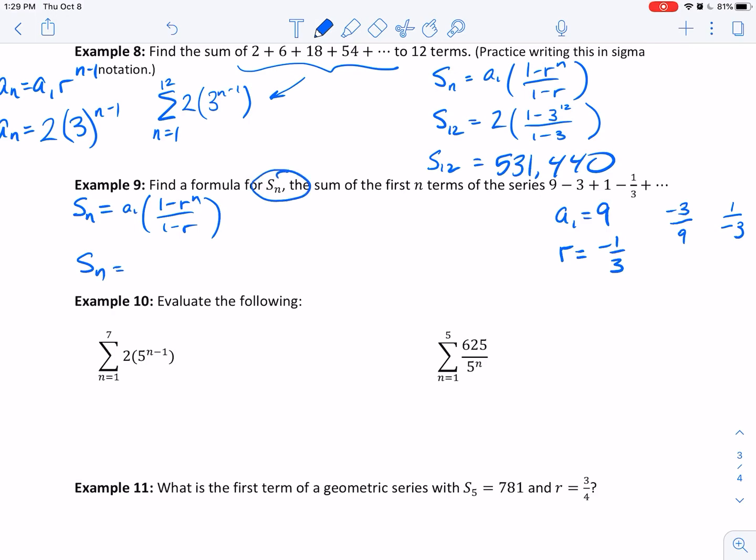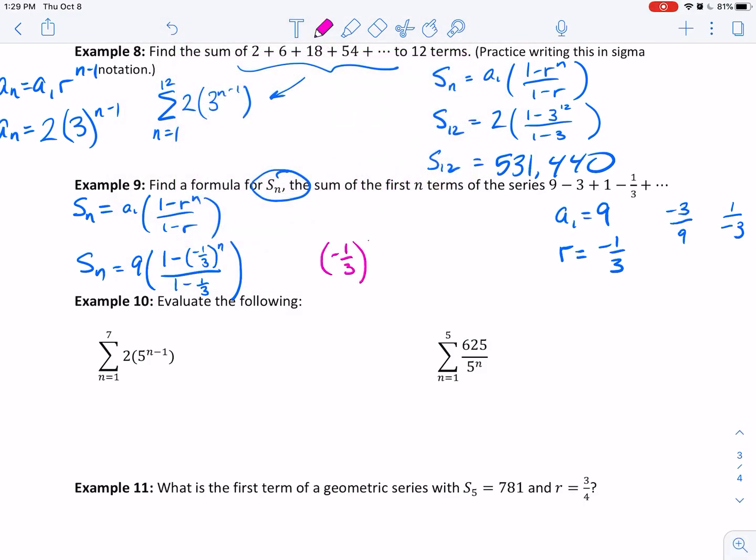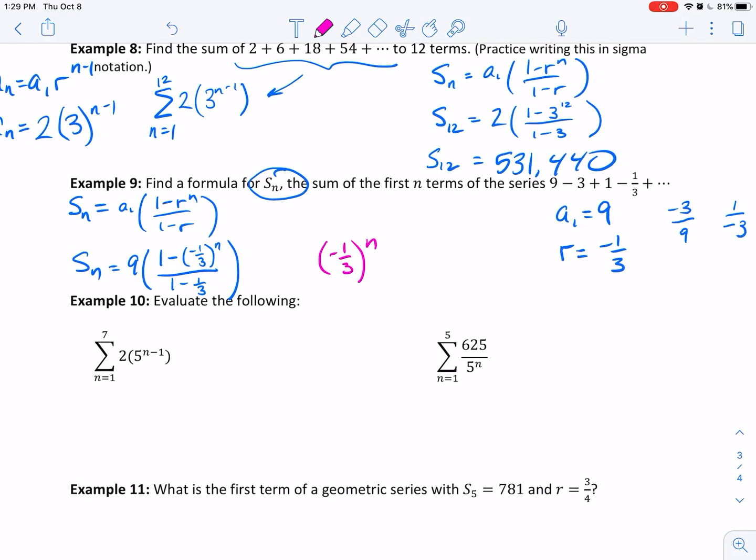We want a formula for the sum of the first n terms. The formula in general is S sub n equals a sub 1 times 1 minus r to the n over 1 minus r. We don't know n, so they're asking for a formula for n. Our first term is 9, our r value is negative 1 third to the n. I want to point out that this is going to change. If I have negative 1 third raised to the n power, it's going to oscillate back and forth between positive and negative. If n is an even number, that's going to be positive. If n is an odd number, it's going to be negative.